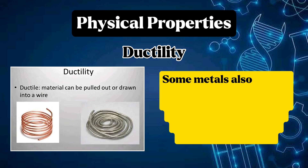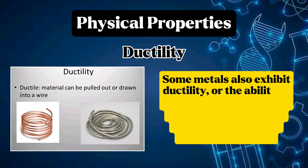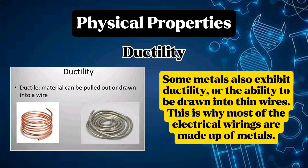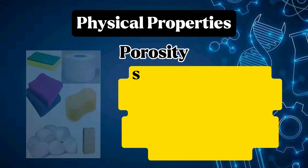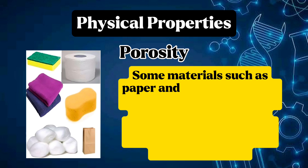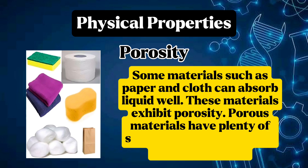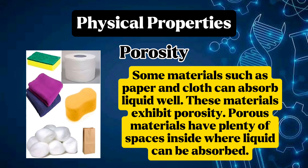Some metals also exhibit ductility, or the ability to be drawn into thin wires. This is why most electrical wirings are made up of metals. Some materials such as paper and cloth can absorb liquid well — these materials exhibit porosity. Porous materials have plenty of spaces inside where liquid can be absorbed.